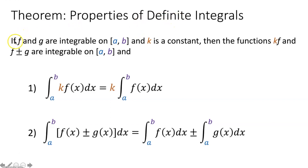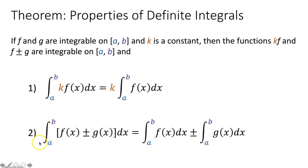Now let's talk about the properties of definite integrals. If f and g are integrable on the closed interval from a to b and k is a constant, then k times f and f plus or minus g are integrable on that interval. The integral from a to b of k times f of x dx equals k times the integral from a to b of f of x dx — you can move the constant out front of the integral sign, just like the constant multiple rule with derivatives. Also, if you're taking the integral of a function with multiple terms, you can take the integral of each term separately.